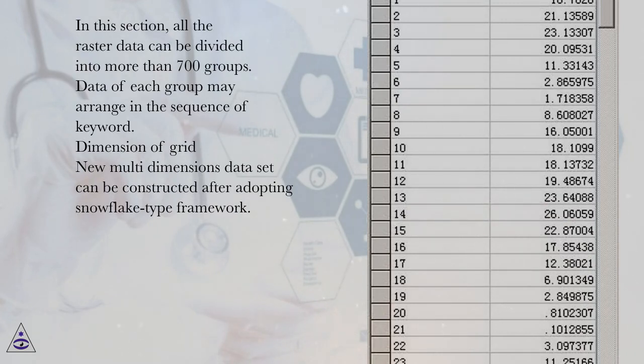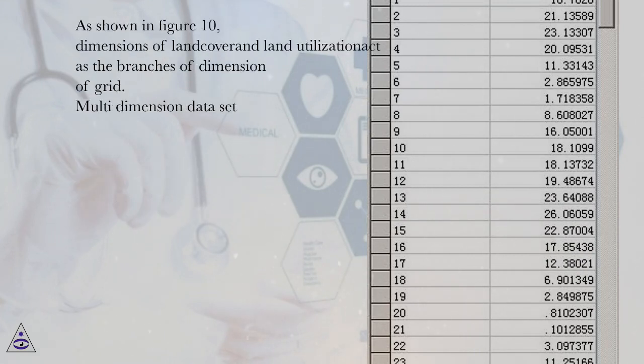New multi-dimensions data set can be constructed after adopting snowflake type framework. As shown in figure 10, dimensions of land cover and land utilization act as the branches of dimension of grid. Multi-dimension data set.